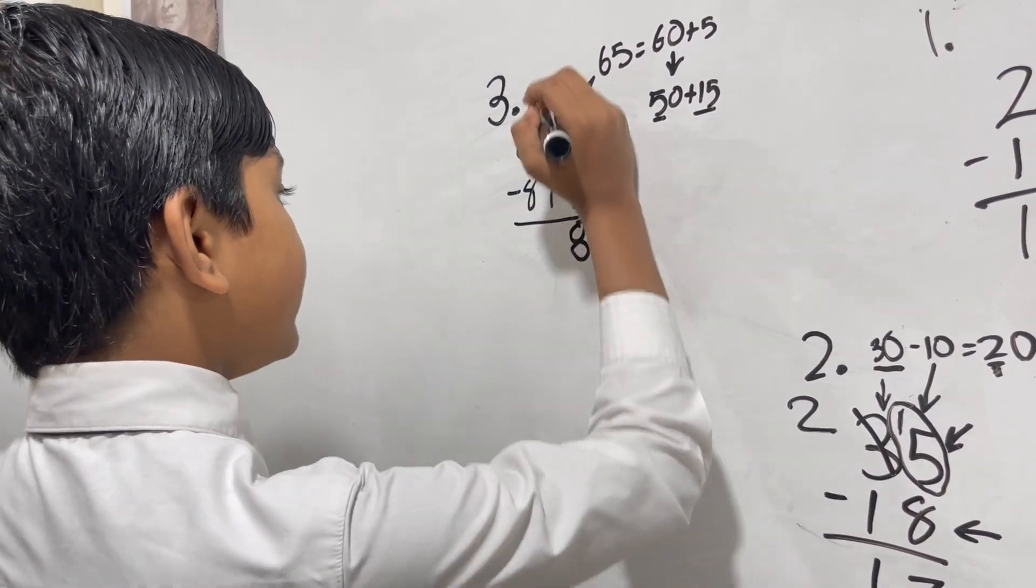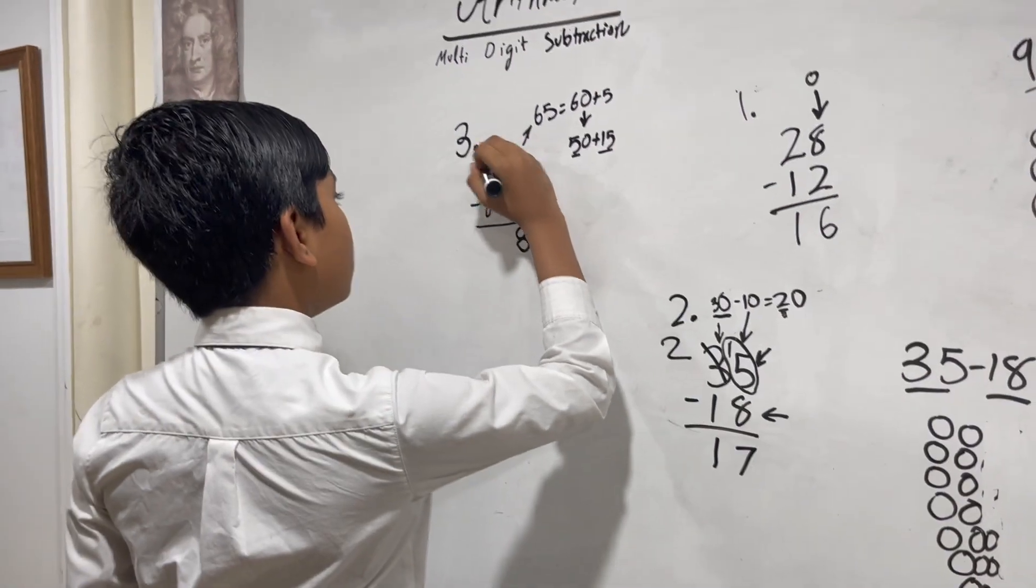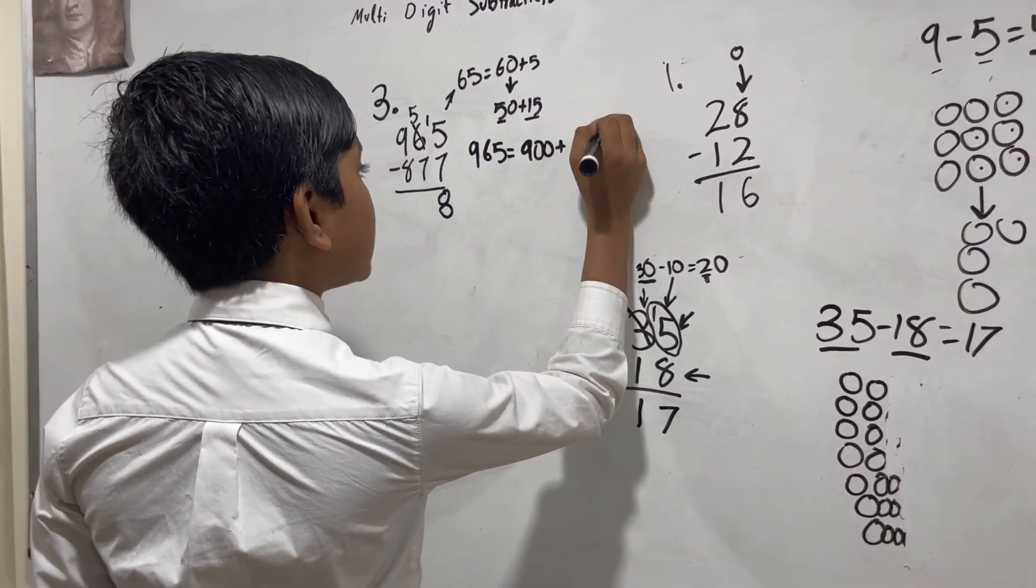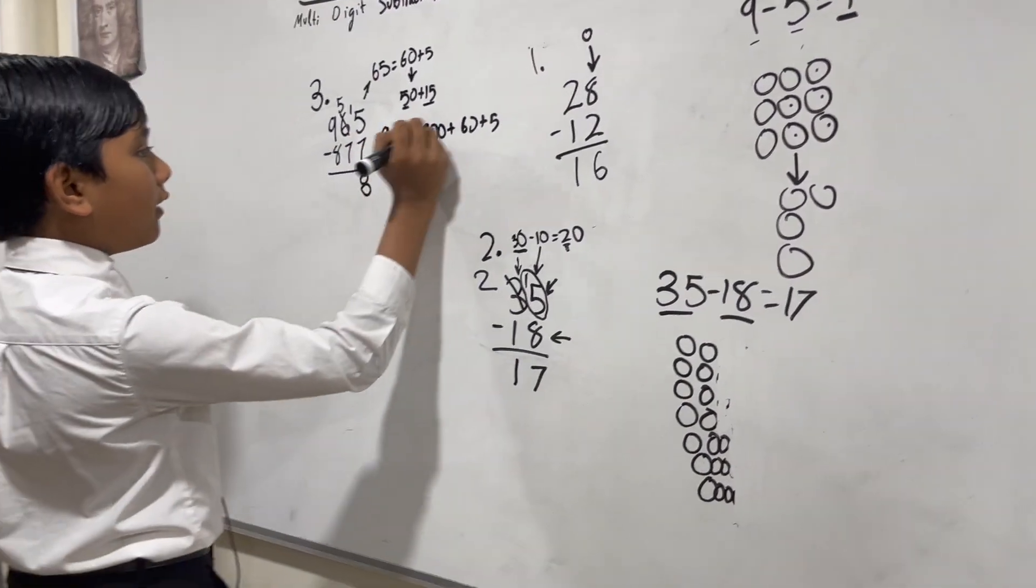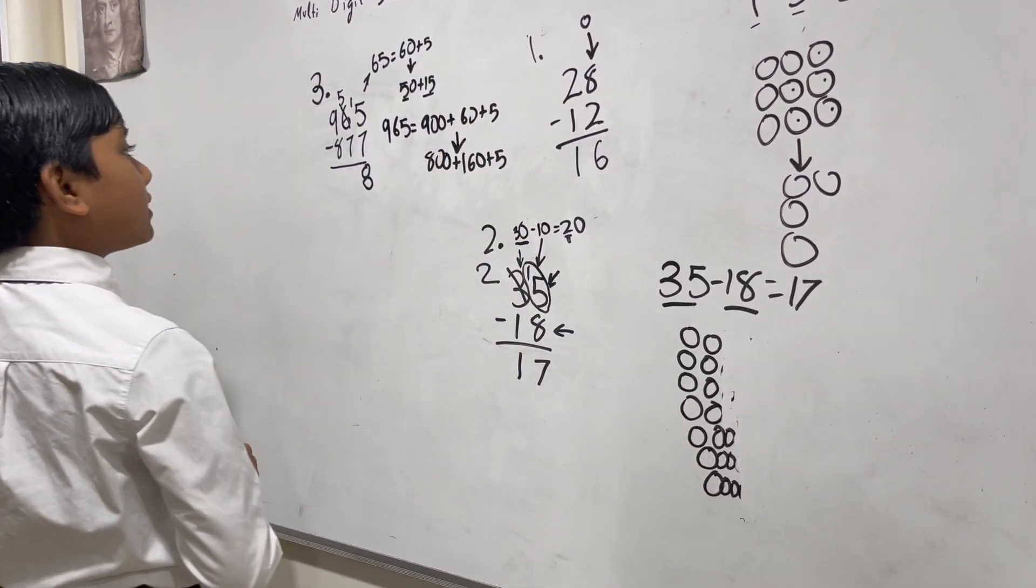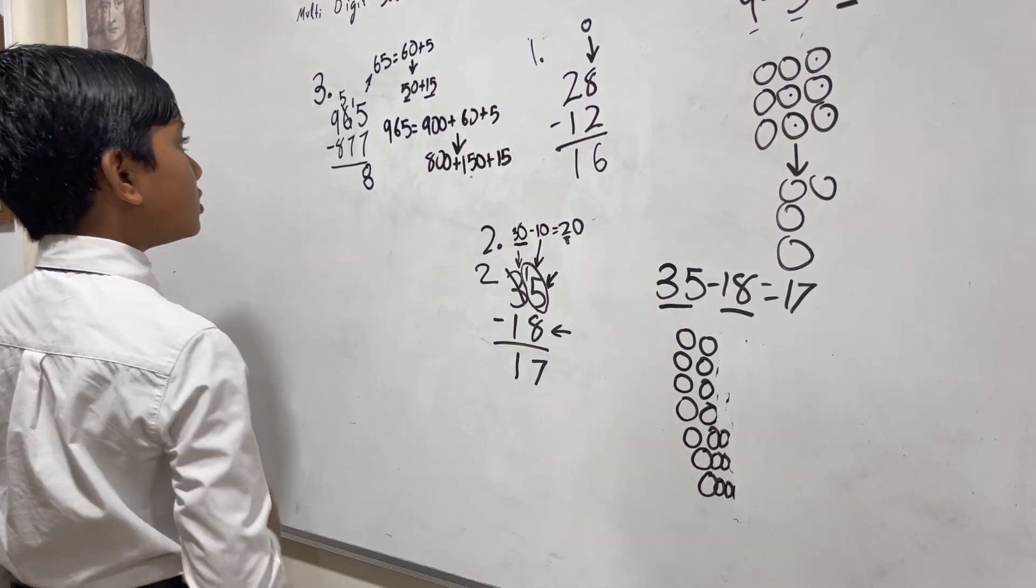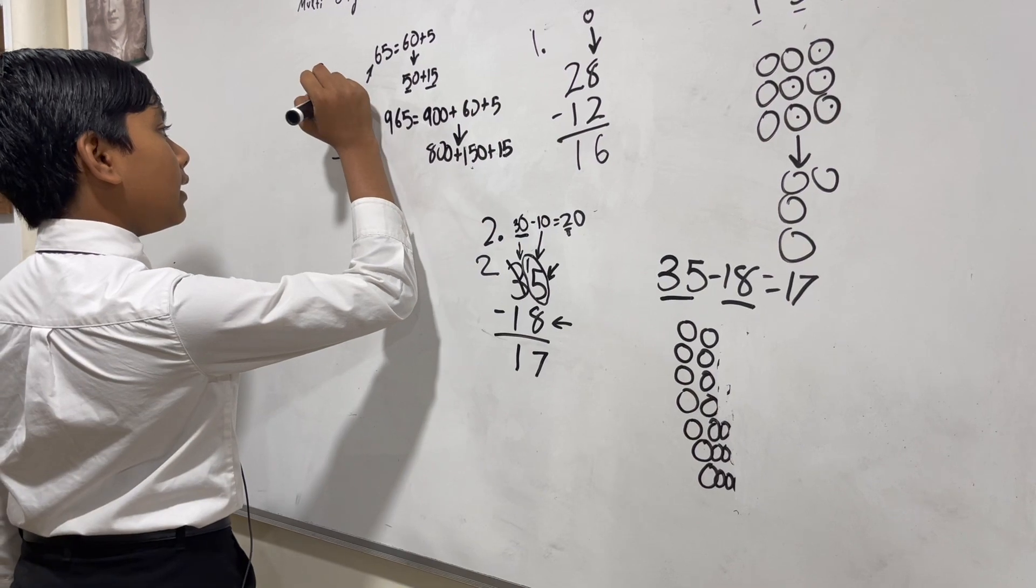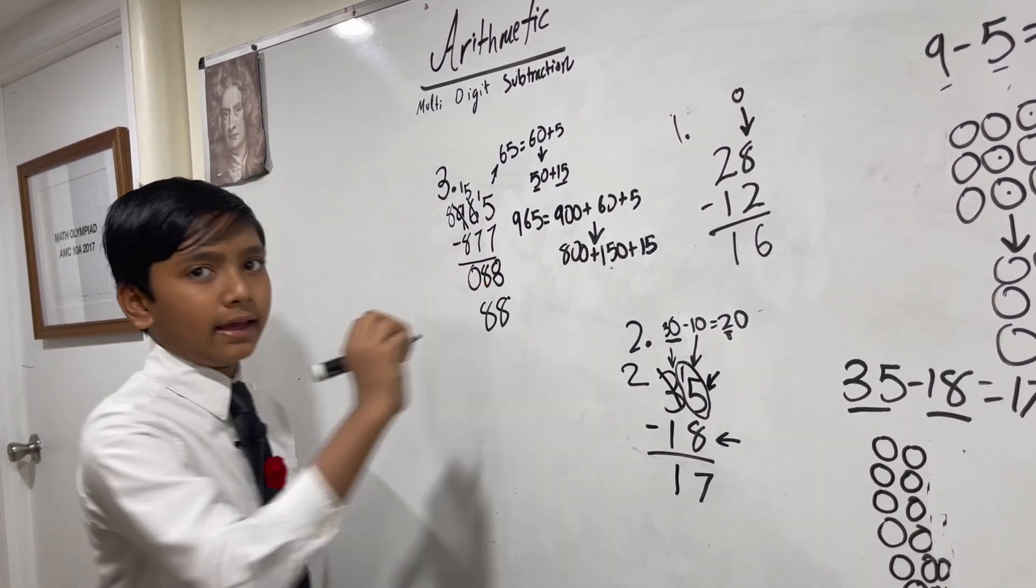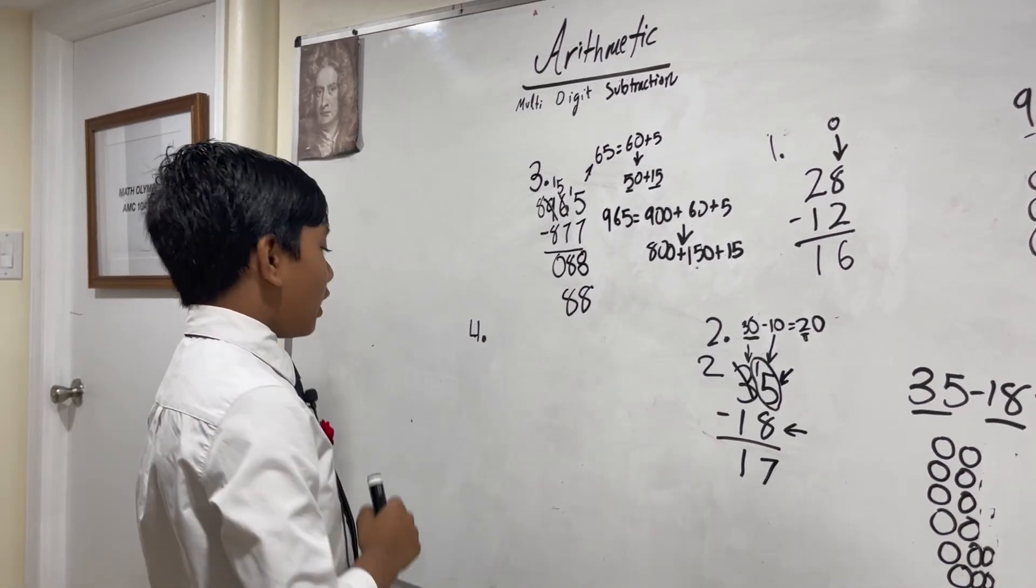But now 5 minus 7 is gonna be harder. Here's a reminder once again that this 9, which represents 900, can be grouped off into 800 and 100, which then joins with the 6—or rather the 5 in this scenario because remember we did this. So this becomes 8 and this is a 15. So now 15 minus 7 is 8. 8 minus 3 is... wait, 8, or 88.